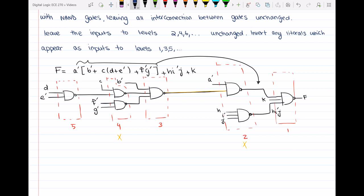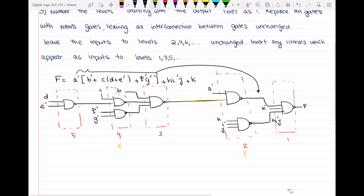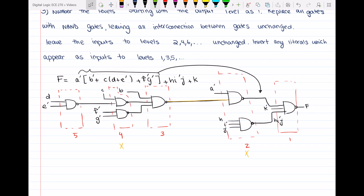So this K will be K prime. See, I'm not changing that H, I prime, J. Why? Because it is an interconnection between two gates. So the only input in level number one should be changed is K, which is becoming K prime. Then we go to level number three, and we see that this B prime should be B. Then we will leave the inputs level four unchanged, and we go to level five, and this will be D prime. And E.